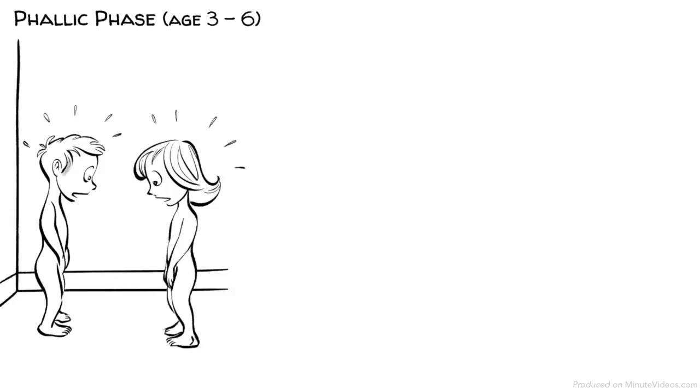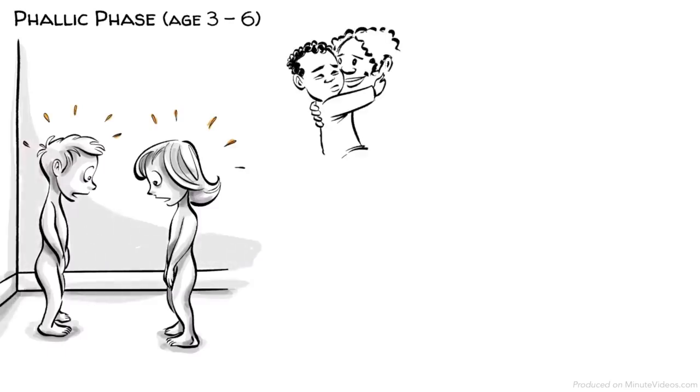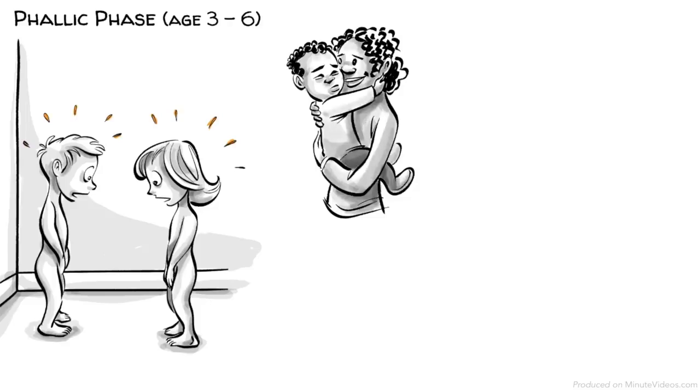The phallic phase, age three to six. Our libido now turns to the genitals as we discover the differences between the female and the male gender. The boys' conflict in this phase occurs as a rivalry with their father, also called the Oedipus complex.